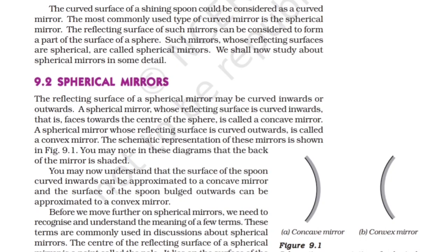Spherical Mirrors: The reflecting surface of a spherical mirror may be curved inwards or outwards. A spherical mirror whose reflecting surface is curved inwards — that is, faces towards the center of the sphere — is called a concave mirror. A spherical mirror whose reflecting surface is curved outwards is called a convex mirror. The schematic representation of these mirrors is shown in figure 9.1. The back of the mirror is shaded in these diagrams. The surface of the spoon curved inwards can be approximated to a concave mirror, and the surface bulged outwards can be approximated to a convex mirror. Before we move further, we need to recognize a few terms.